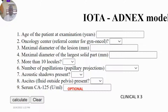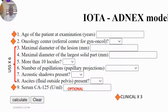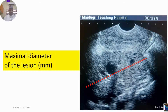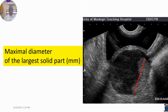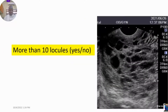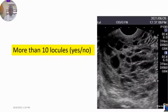These are the nine variables: variables one, two, and nine are the clinical variables; three to eight are the six ultrasound variables. The maximum diameter of the lesion in millimeters, the maximum diameter of the largest solid component, more than 10 locules yes or no, and number of papillary projections — none, one, two, three, or more than three.